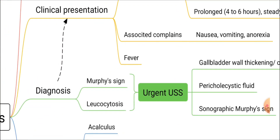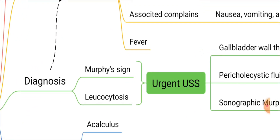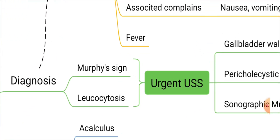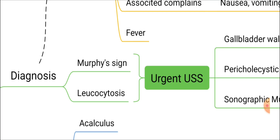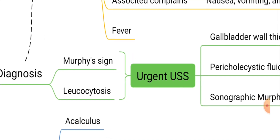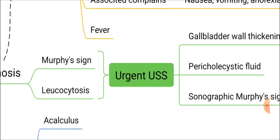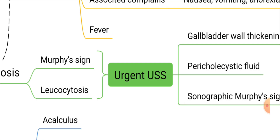In clinical examination you can elicit Murphy's sign, where you palpate the area of the gallbladder at the tip of the ninth costal cartilage. While pressing, ask the patient to breathe; when the patient deeply inhales, they will feel intense pain and suddenly stop breathing — that is Murphy's sign.